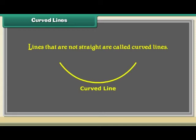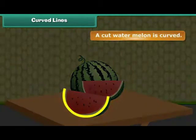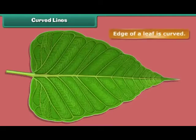Curved lines. Lines that are not straight are called curved lines. A cut watermelon is curved. The edge of a leaf is curved.